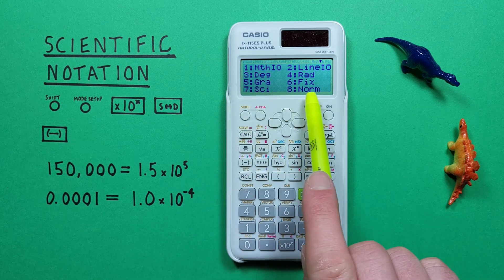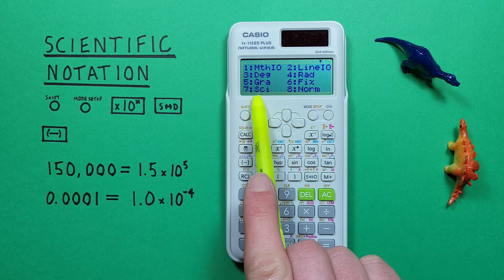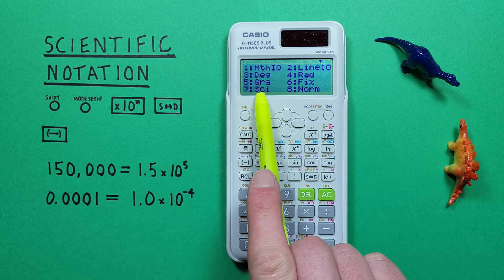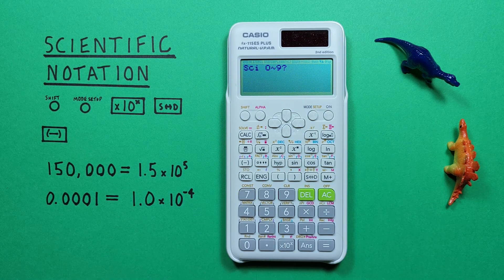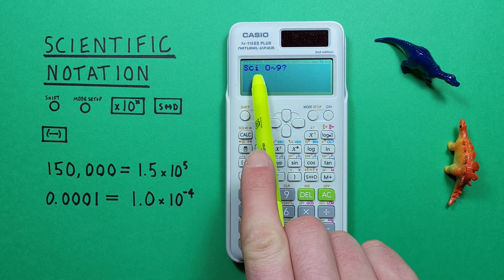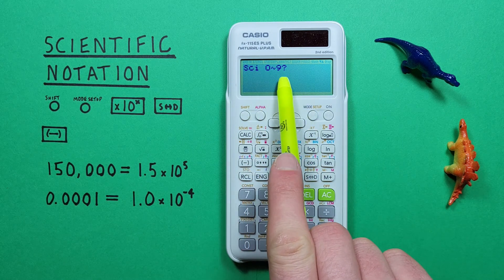That brings us to this menu here, where we see number 7 is SCI for scientific notation mode. So if we press 7, it will then bring us to this menu here, SCI 0 to 9. This is asking how many digits we want to appear.